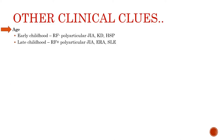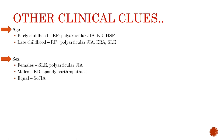Other clinical clues include age: common causes in early childhood are rheumatoid factor-negative polyarticular JIA, Kawasaki disease, and Henoch-Schönlein purpura; in late childhood, rheumatoid factor-positive polyarticular JIA, enthesitis-related arthritis, and SLE. Regarding sex, females usually have SLE and polyarticular JIA, while males usually have Kawasaki disease and spondyloarthropathies; systemic JIA has almost equal sex predilection.